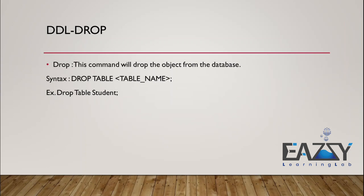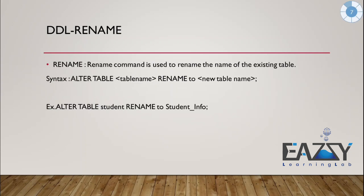Similarly, if you want to drop a column from the table, you use: ALTER TABLE student DROP COLUMN gender — this drops that column. And if you want to modify the data type, for example you added gender as VARCHAR(1) but now want to increase the size to VARCHAR(3), you use the MODIFY clause: ALTER TABLE student MODIFY gender VARCHAR(3).